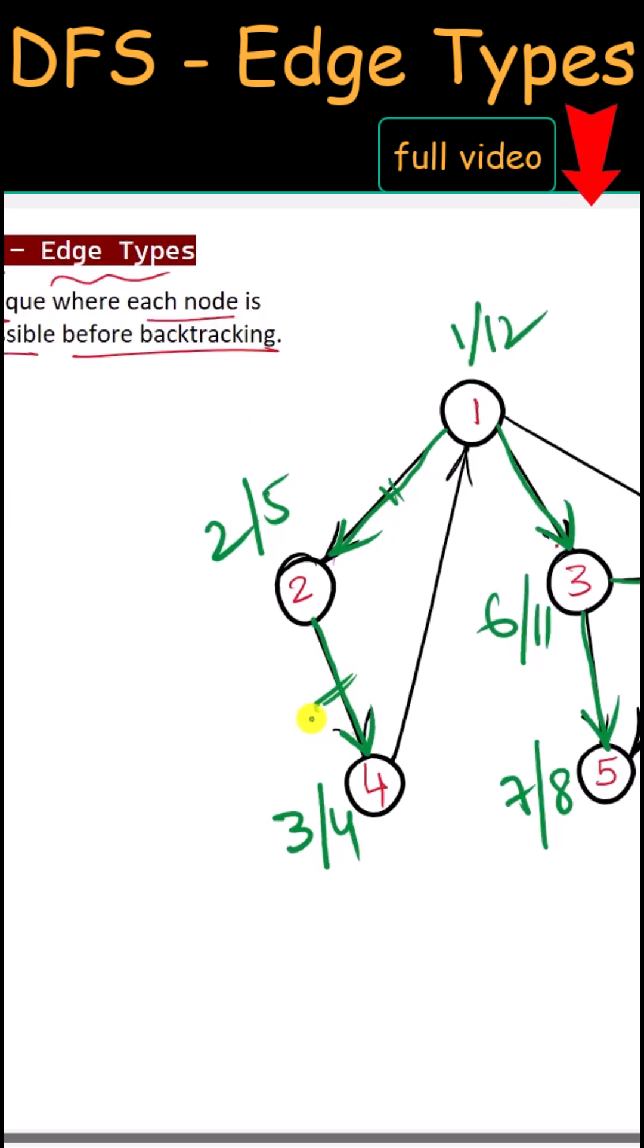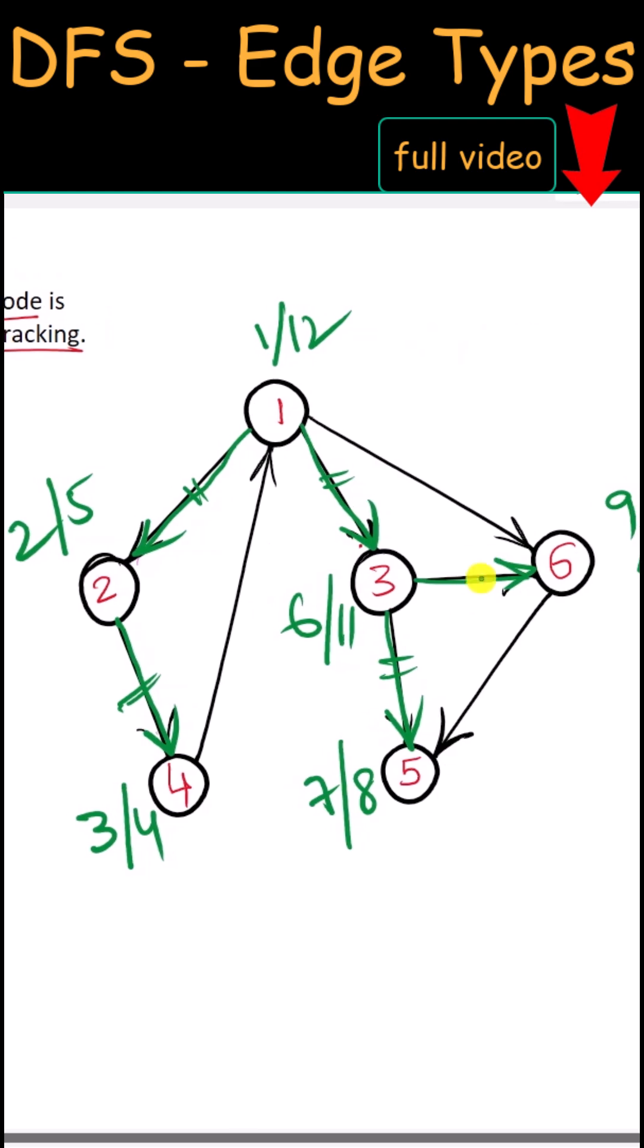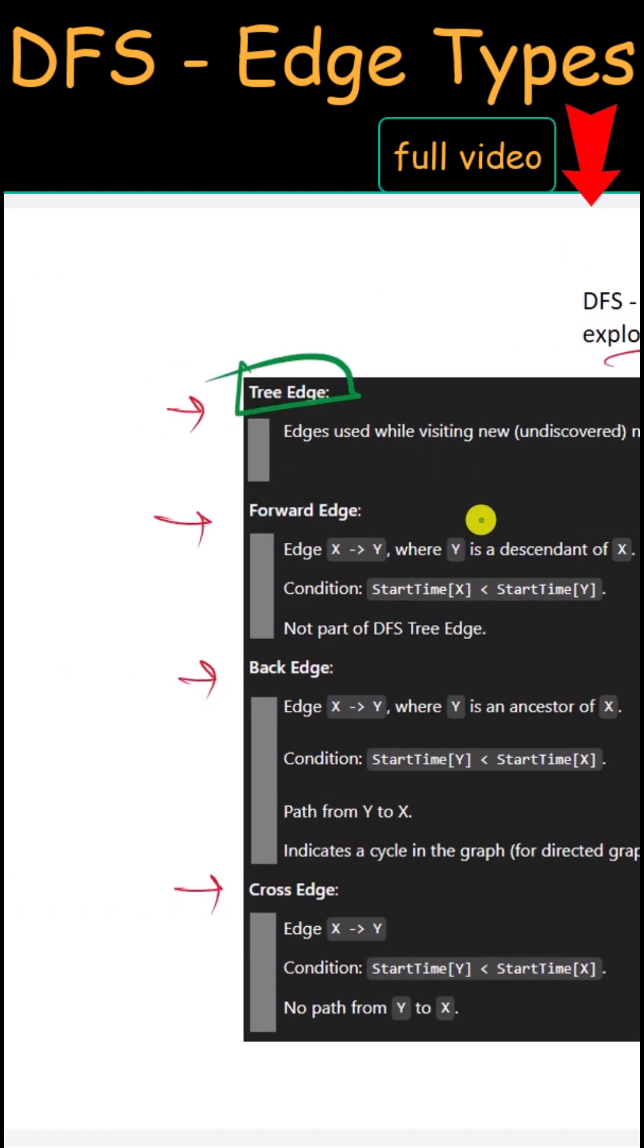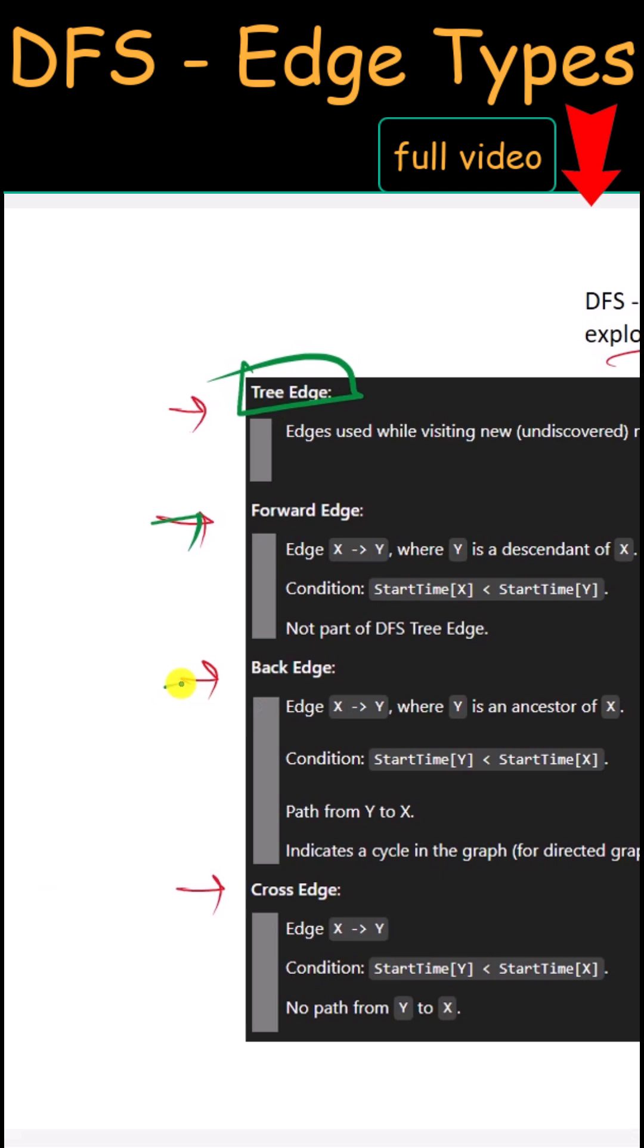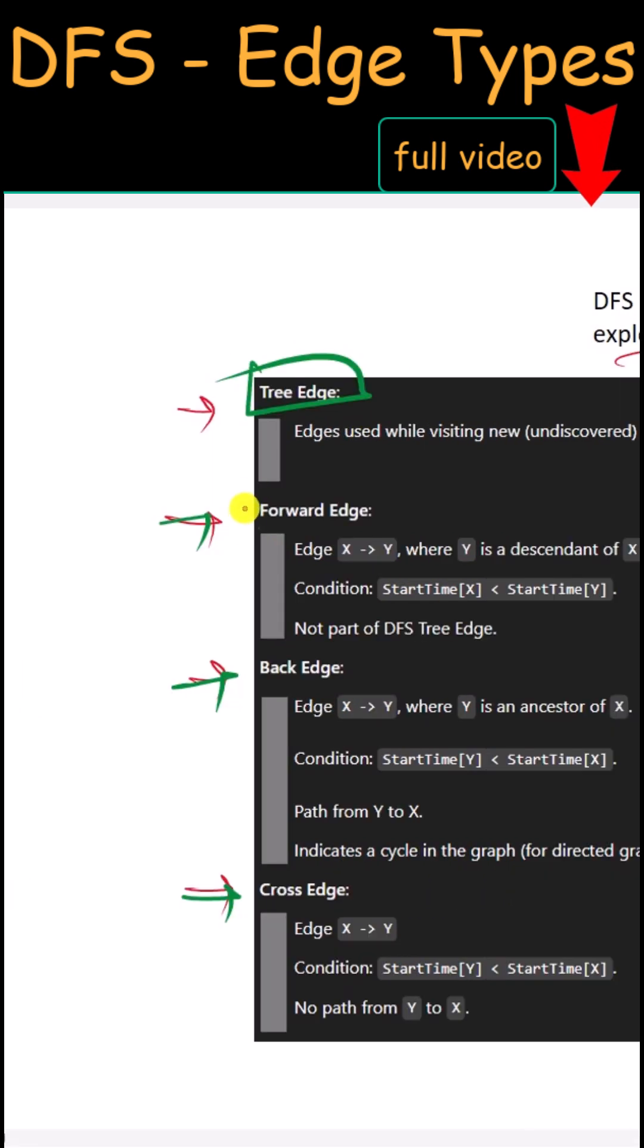The green edges which are part of this DFS traversal are the tree edges. Except the tree edges, all the others can be forward edge, back edge, or cross edge.